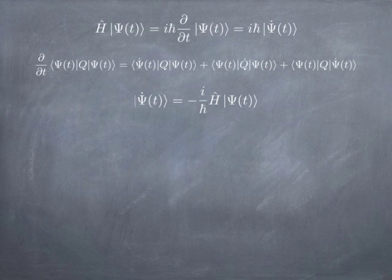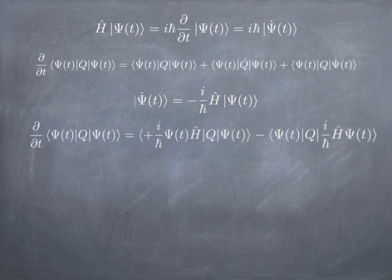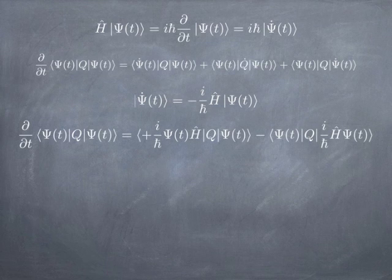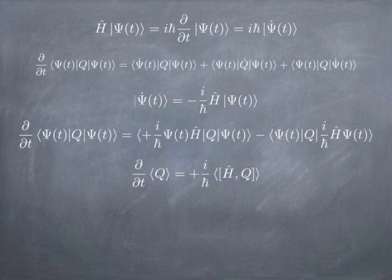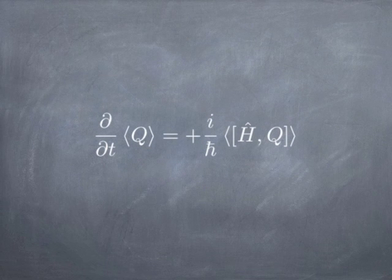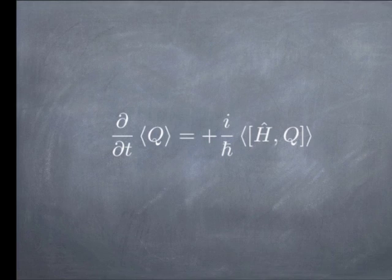Psi-dot is minus i Hamiltonian over h-bar. The bra gives a plus i instead of minus i. When you plug all that in, you get the Hamiltonian hitting the operator minus the operator hitting the Hamiltonian — that's nothing other than the commutator of the Hamiltonian with the operator. So the final result is quite simple: the time rate of change of the expectation value of an operator is proportional to the commutator of the operator with the Hamiltonian. If an operator commutes with the Hamiltonian, its time rate of change is zero. If it doesn't commute, it does have a time rate of change.